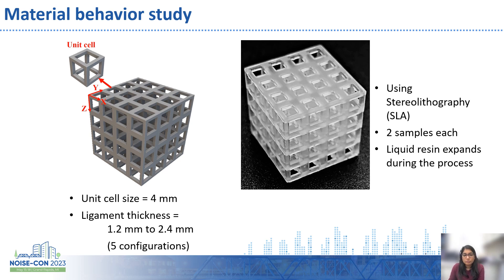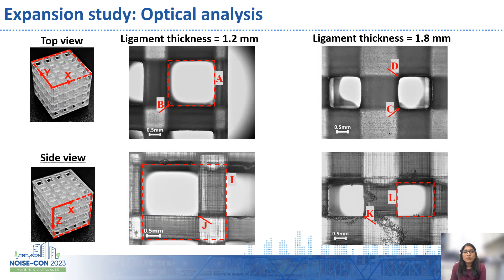Two samples of each configuration were fabricated in order to have a wide range of data. A Form 3 printer was used to print these samples. All samples were analyzed optically using a microscope in our lab for changes in the ligament thickness, pore size, and shape. All solid ligaments and pore sizes were captured and measured on the top and side surfaces to understand what features or defects the stereolithography printing technique produces.